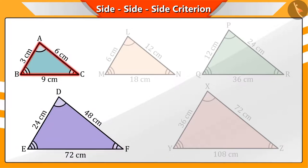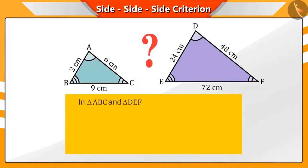Can you tell if triangles ABC and DEF are similar?